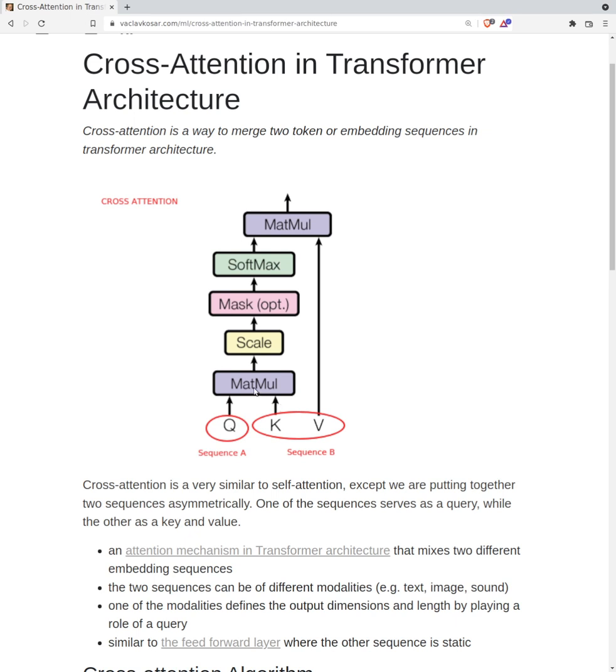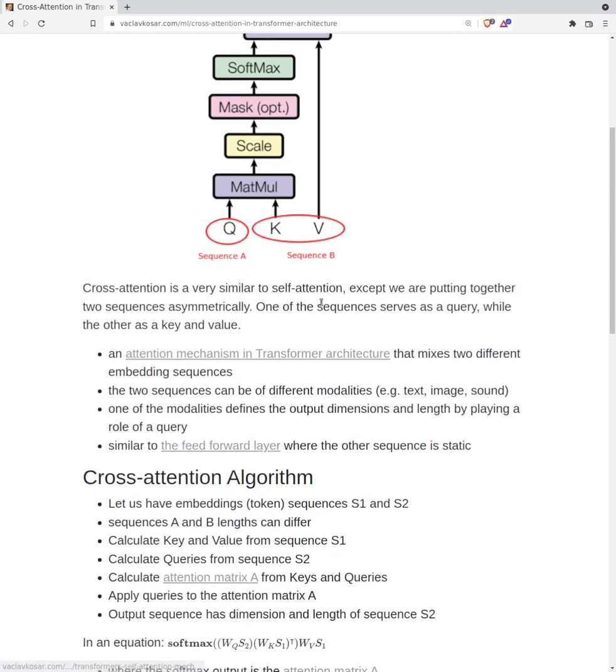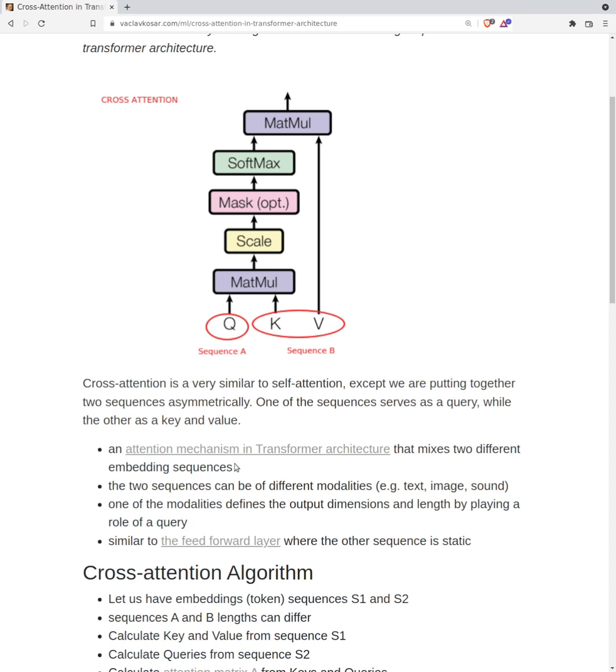we can also choose the output dimension, but the length has to follow the length of the query sequence. So basically, cross attention is an attention mechanism in transformer architecture that can mix two different embedding sequences.